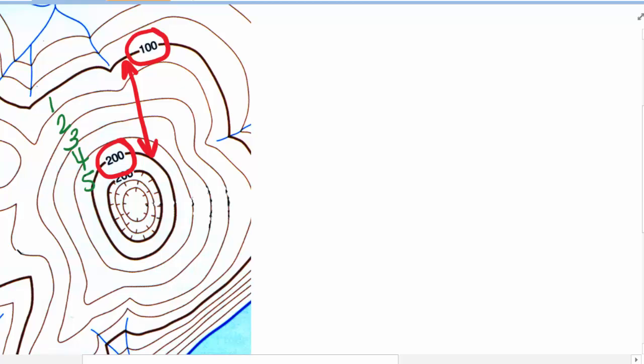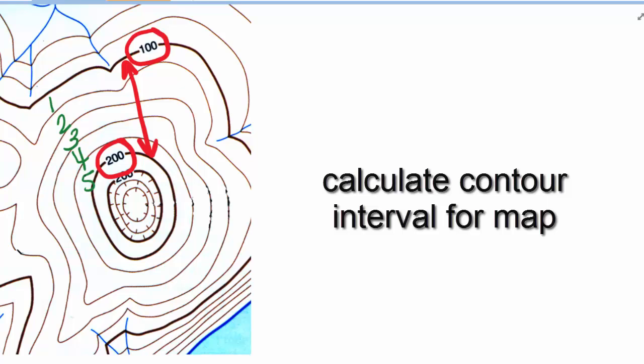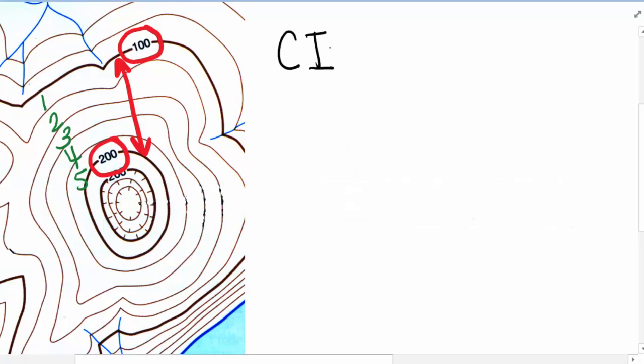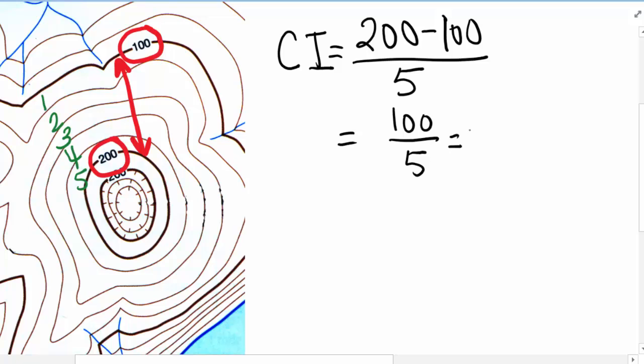And with those two observations, we'll be able to calculate the contour interval for the map as a whole. The contour interval is just the difference between the index line elevations, which is 200 minus 100, divided by the number of intervals. That is five. And that difference gives us a value of 20 feet per interval.